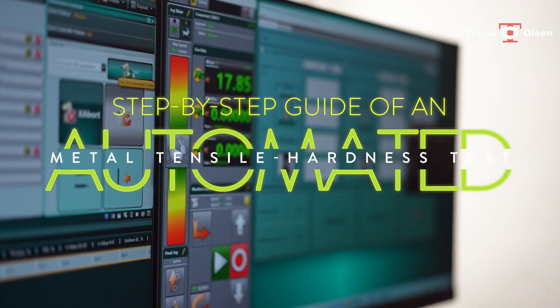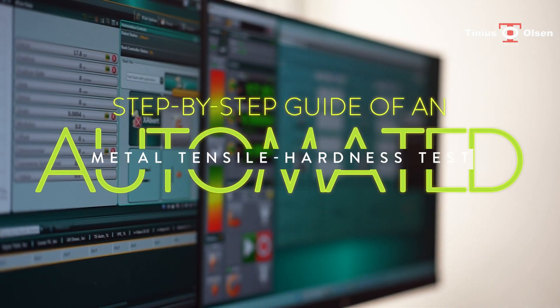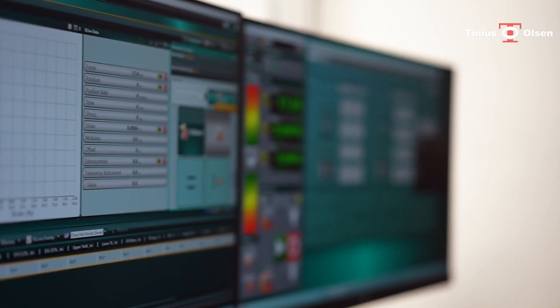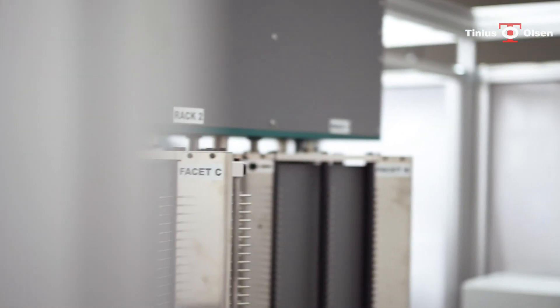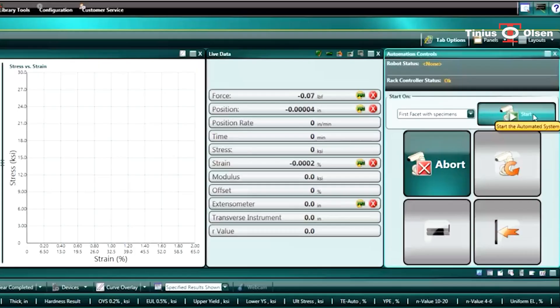Welcome to our step-by-step guide on running a test with the automated metal tensile hardness testing system. First, place your specimens on the two rotary three-sided triangular racks, then click on the start test button on your Horizon software.